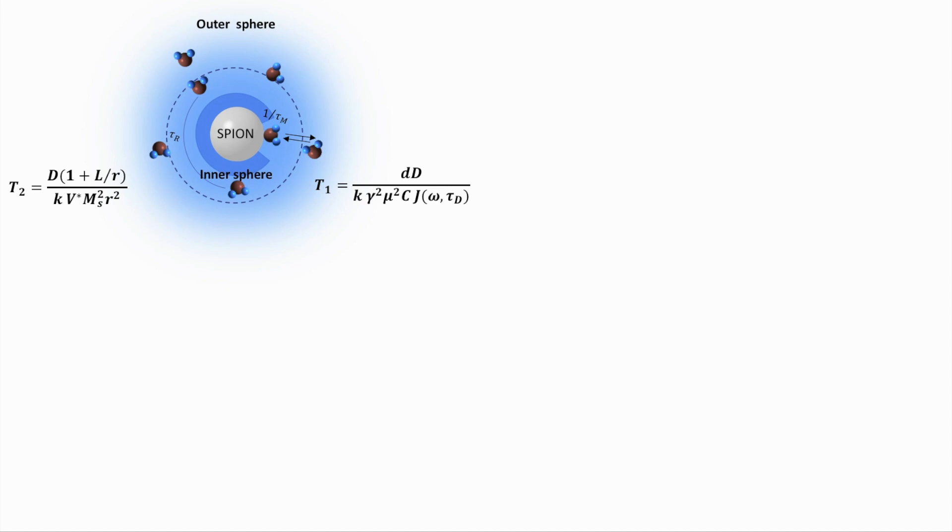However, ferraheme can impact the spin-lattice relaxation time of the surrounding water protons, and thus can also act as a T1 contrast agent. The T1 enhancement of ferraheme can be attributed to several possible factors, such as increased surface iron core exposure due to high surface area-to-volume ratio, the surface effect on magnetization and water exchange, and suppressed magnetization at lowered iron concentration. Thus, ferraheme has relatively high R1 and R2 values and can act as a dual T1-T2 contrast agent.